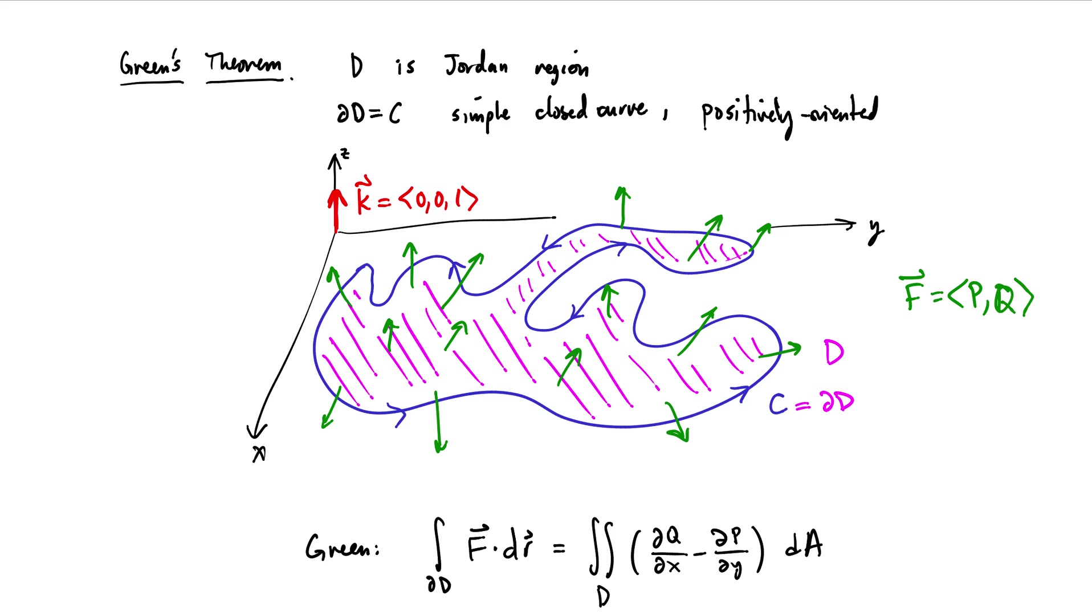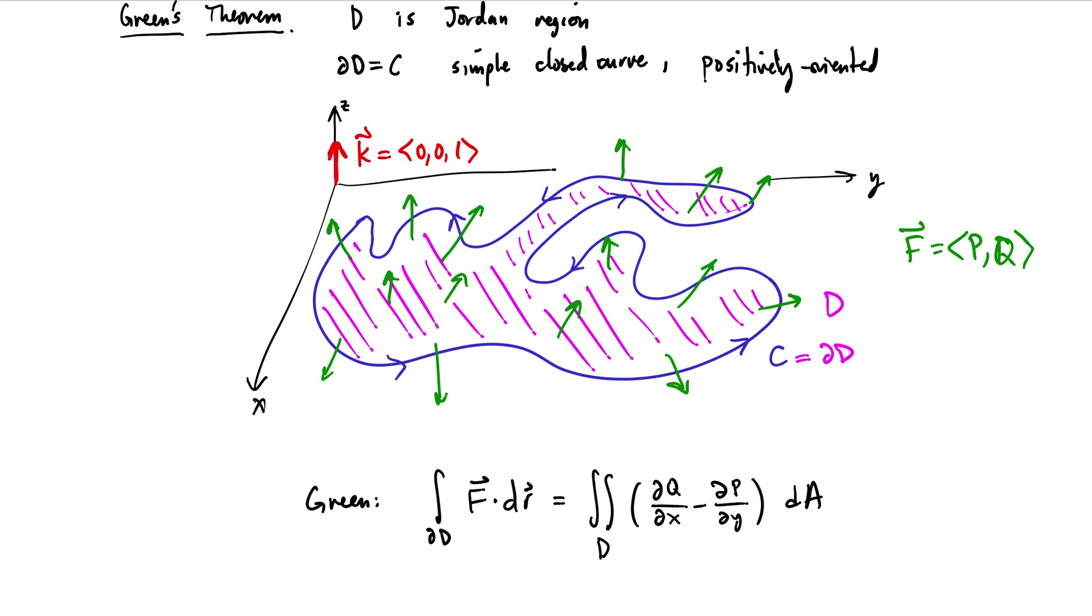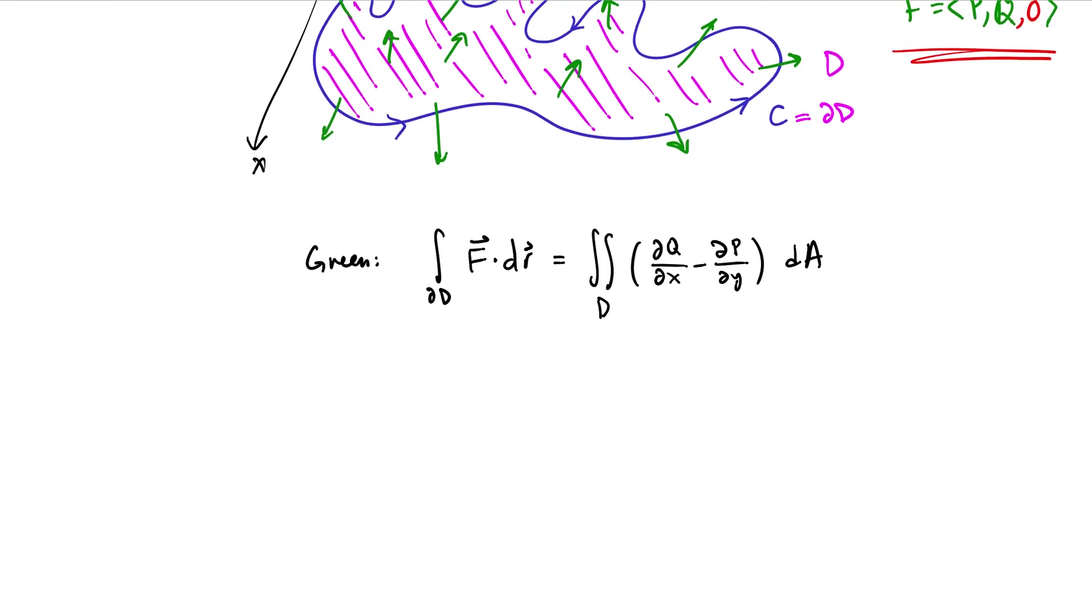So it picks out the Z component direction. Now the other thing that we can do is if we embed this vector field in three-dimensional space, so not only is the region thought of as living on the floor in a three-dimensional room, but the vector field itself is thought of as living only on the floor, then we can extend this vector field by just adding a zero component. We make sure that the vector field is only working in the two components for which the domain lives. And at this point, once we have a vector field in three dimensions, then we can apply the curl to F.